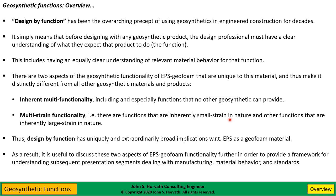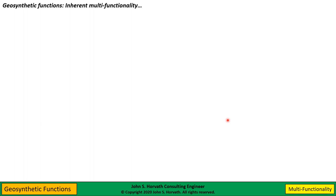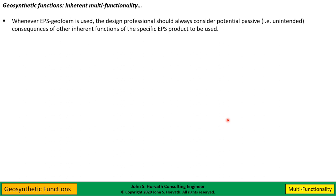Let's discuss multi-functionality and multi-strain functionality a bit more, because it really provides a framework for understanding everything I'm going to talk about regarding manufacturing, material behavior, and standards. With respect to the inherent multi-functionality of EPS geofoam, one thing people don't think about is what I call the passive functions of the material. EPS geofoam can provide many, many functions inherently, and the bottom line is those functions are going to be there whether you call on them in your particular application or not. Sometimes these other functions lurking in the background can have unintended consequences — so we need to think them through during the design process.